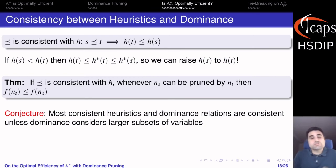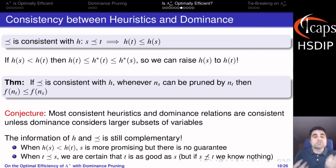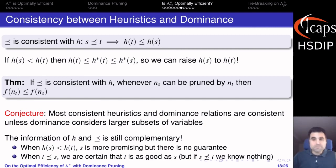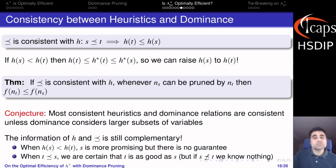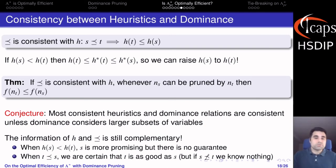We conjecture that this holds for most heuristics and dominance relations. This might make you think that the information from the heuristic and dominance relation is redundant, but actually it is still very complementary. The information provided by the dominance relation is much stronger than that from the heuristic because it gives guarantees about which state is as close to the goal as another. However, the heuristic provides information for any pair of states, whereas the dominance relation only gives information about a subset of pairs.